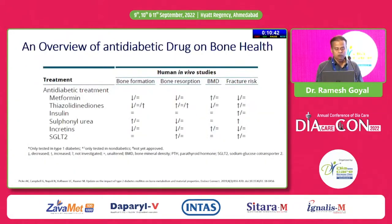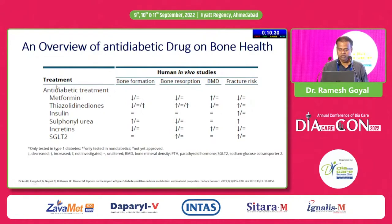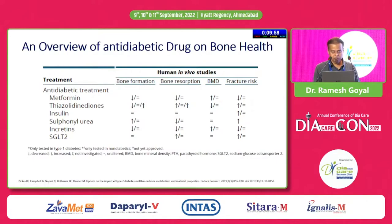Now turning to anti-diabetic drugs affecting bone metabolism. Metformin is a neutral agent as far as bone health is concerned. Glitazones can reduce bone mineral density and increase the risk of fractures. Insulins are neutral. Sulfonylureas may increase the risk of fractures — not due to effect on bone density, but due to increased risk of falls, possibly from hypoglycemia. Incretins are neutral. SGLT2 inhibitors can increase bone resorption and may increase fracture risk in the long run.